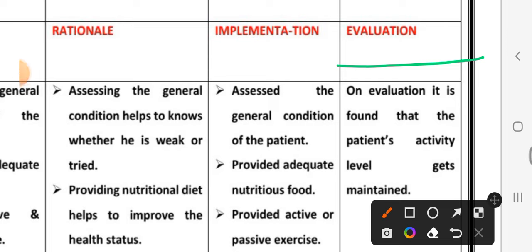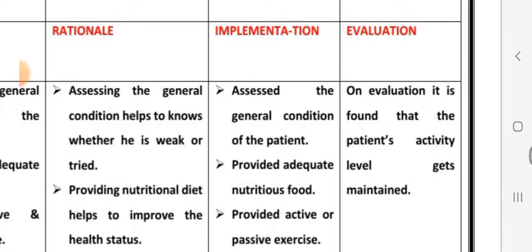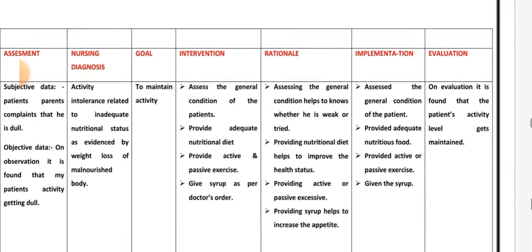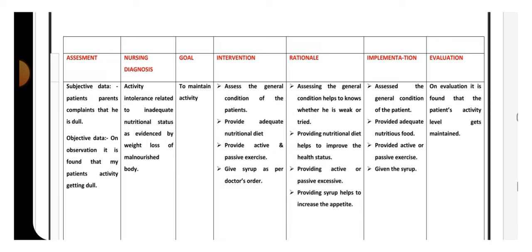Evaluation: it is found that the patient's activity level gets maintained and the patient is energetic and active. This completes nursing diagnosis number four: activity intolerance related to inadequate nutritional status as evidenced by weight loss and malnourished body.